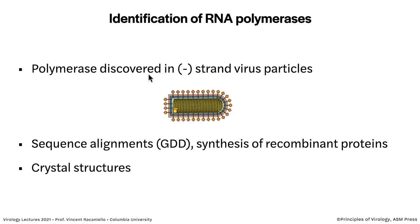Subsequently, an RNA polymerase was discovered in the virus particles of negative-strand RNA viruses. Baltimore reasoned that plus-strand RNA viruses don't need a polymerase in the particle, but negative-strand ones do. He found it in VSV. When we gained the ability to sequence viral genes, we could see the sequences of these polymerases. There is a signature amino acid triplet GDD — Gly-Asp-Asp — which is a signature for the active site. We now have many crystal structures, three-dimensional structures of these polymerases.